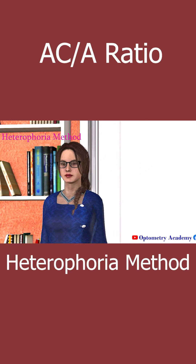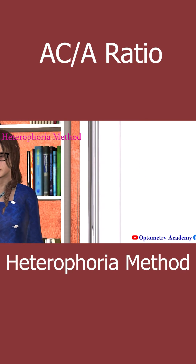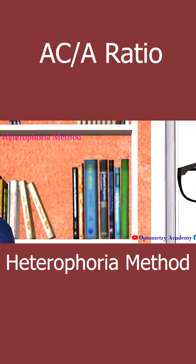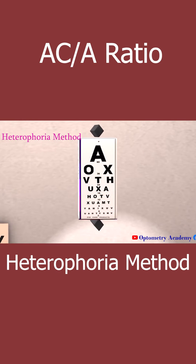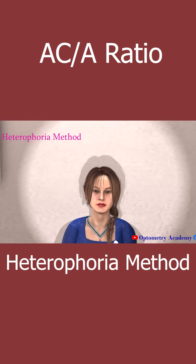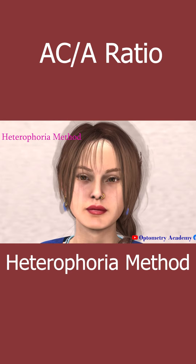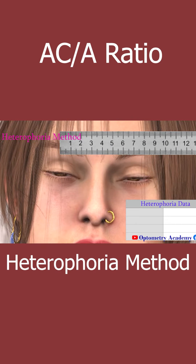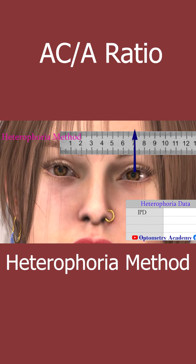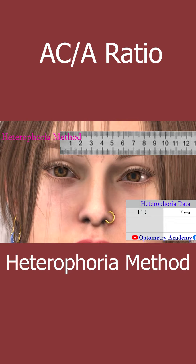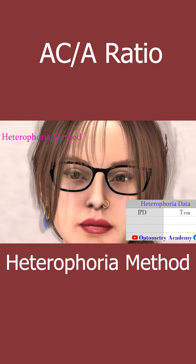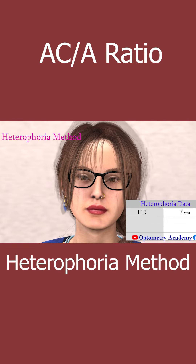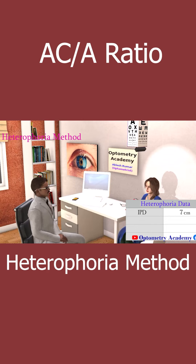Let us understand the whole procedure of the heterophoria method with the help of an example. First, measure the patient's binocular interpupillary distance. In this patient it is 70 mm, so our IPD value is 70 mm or 7 centimeters. Make sure the patient is wearing their appropriate correction.